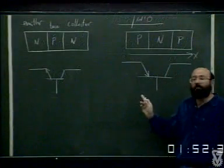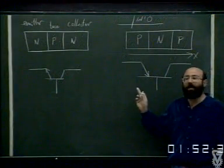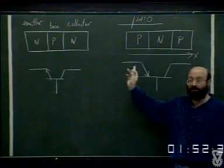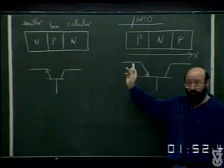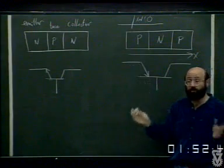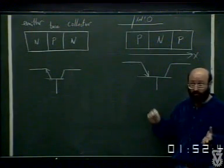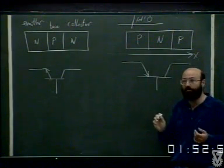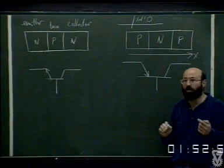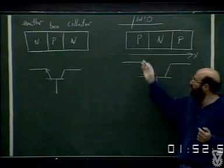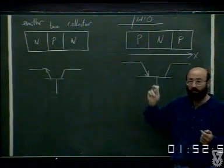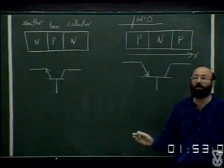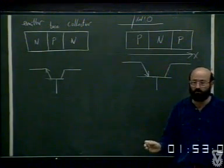אנחנו מיד נלמד שעדיף שהאמיטר יהיה N+. אבל צודקת לגמרי שהמבנה הוא בעיקרון סימטרי. ואפשר, כמו שהפכנו תפקידים של סורס ודריין, בעיקרון אפשר להפוך תפקידים של קולקטור ואמיטר. אלא שכשניכנס יותר לפרטים, נראה שיש תועלת רבה לעשות את האמיטר N+ ובקולקטור לעשות רק N.